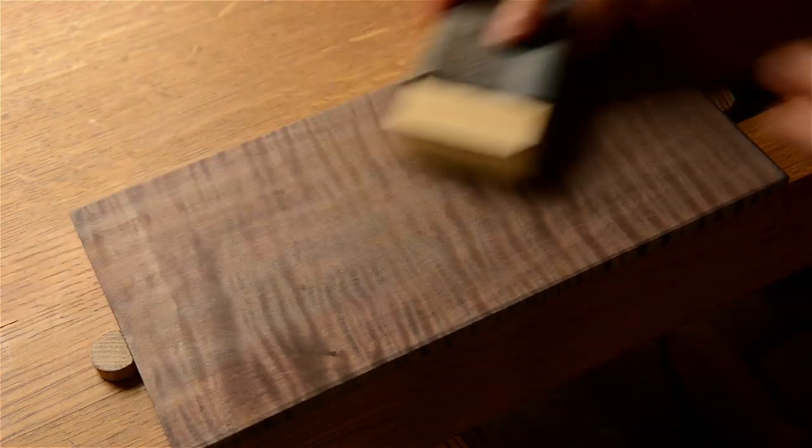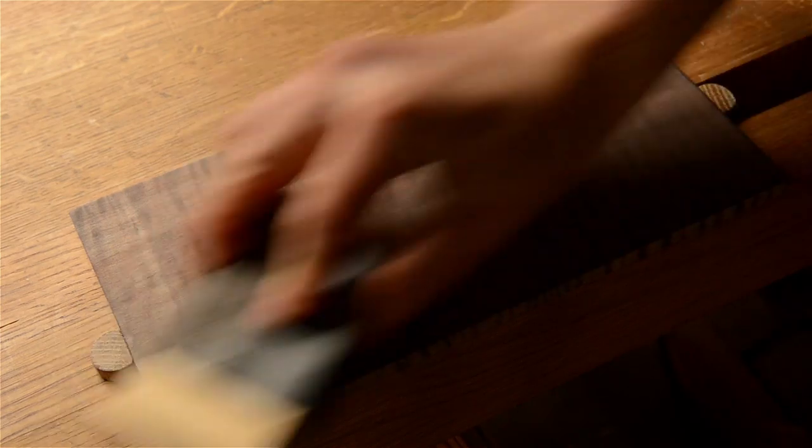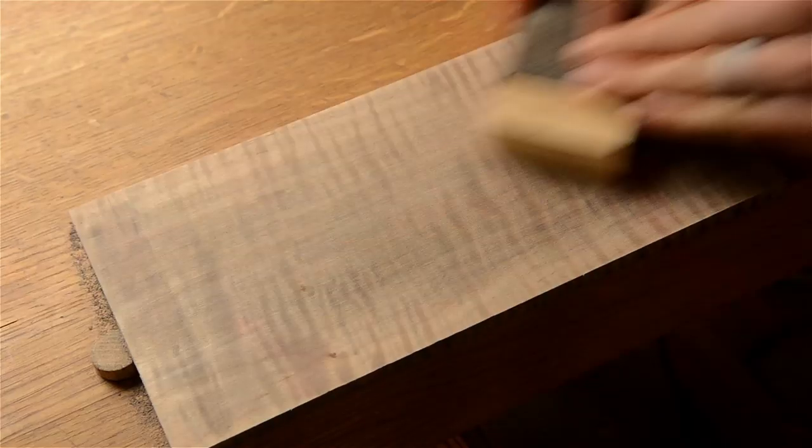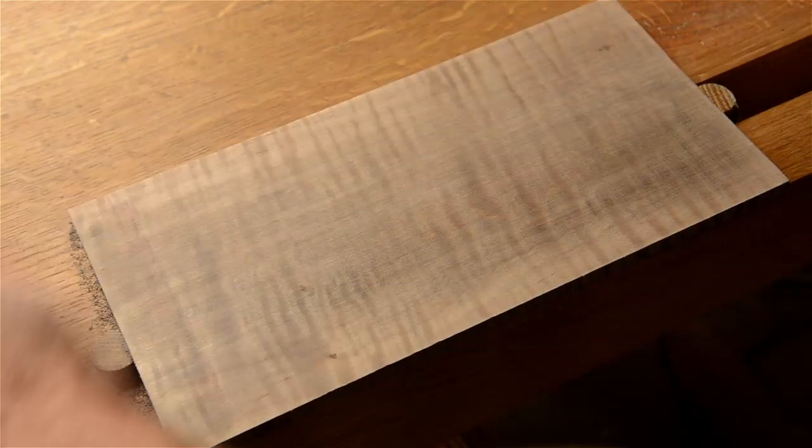Then I use a block to sand the surface of the board with 220 grit sandpaper. I keep sanding until I can only see the dark dye in the figure.